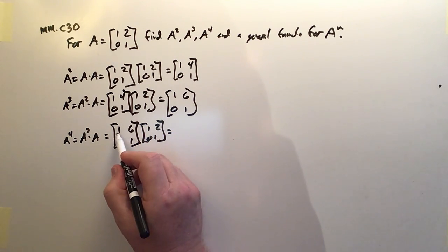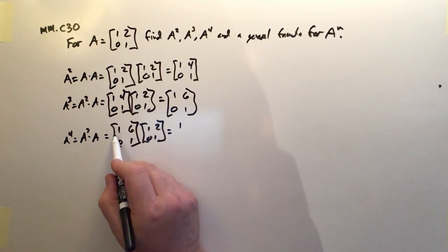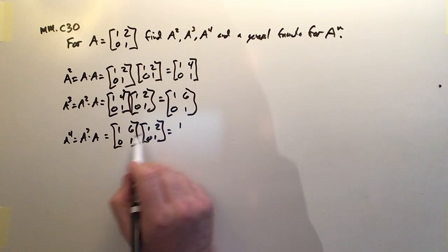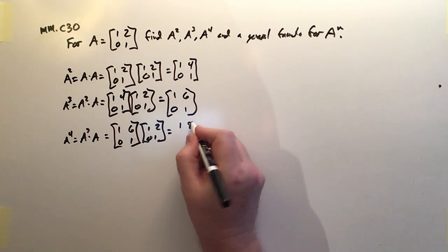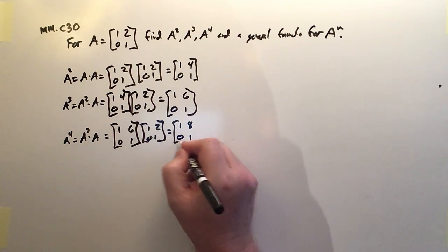We get, again, 1, 6 times 1, 0 is 1 for the upper left-hand corner. The upper right-hand corner is 2 plus 6. That's 8. 0, 1 times 1, 0 is 0. And 0, 1 times 2, 1 is 1. So yeah, that's the way it's looking.